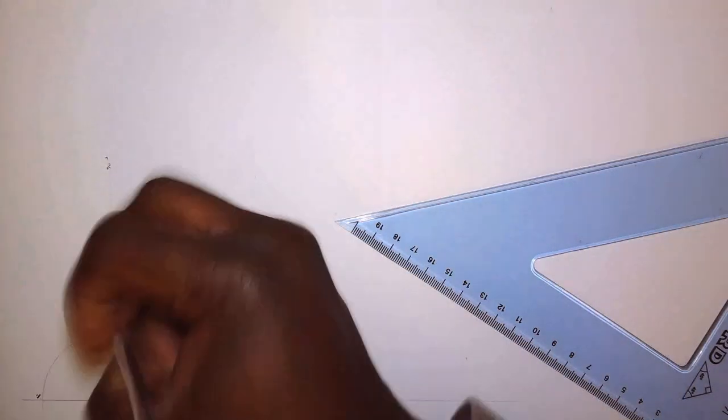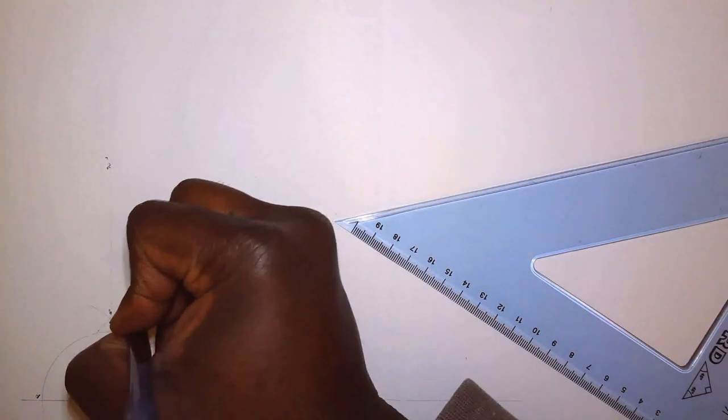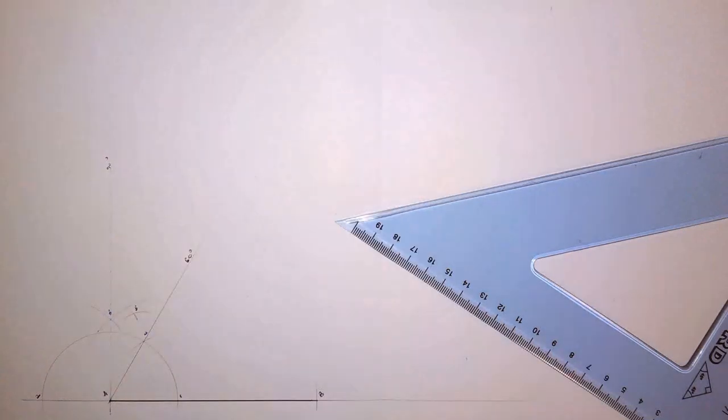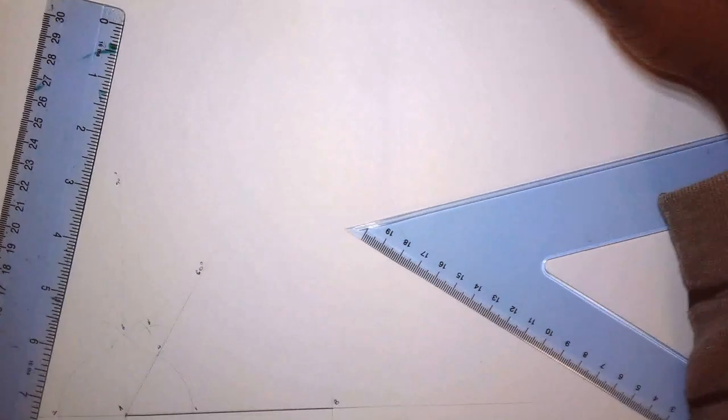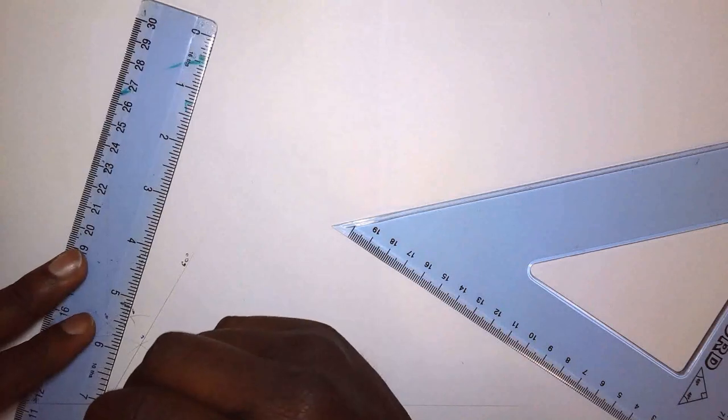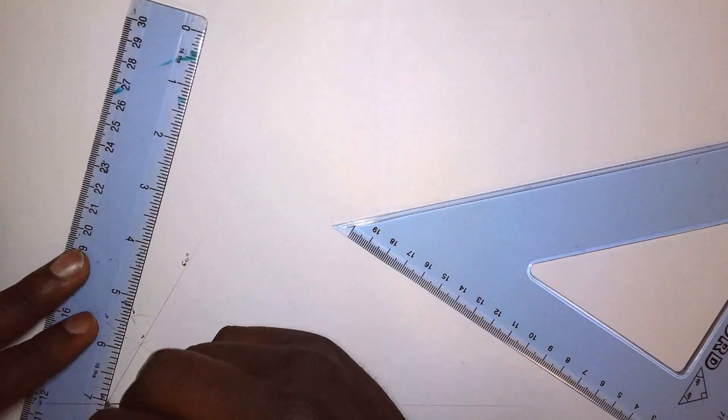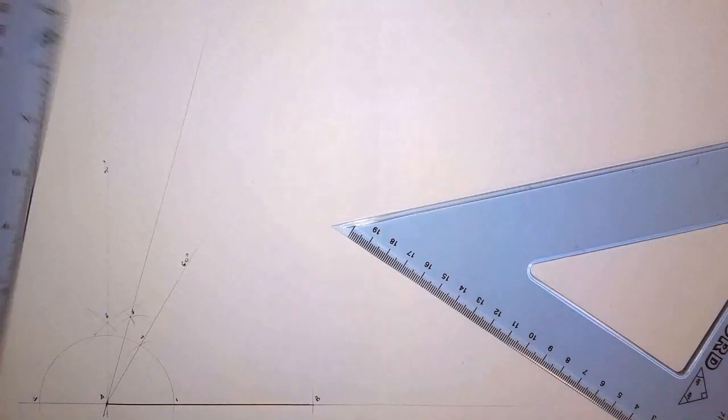So we're going to call that 5. Let me just use a different colour. So we're going to call this intersection 5. So if I draw a line through A through 5 that line respect to the horizontal respect to the horizontal will give us our 75 degree angle. Draw from A through 5 like so.